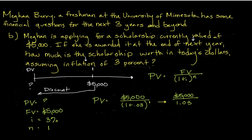Go ahead and take out your calculator or use the one on your computer, and divide five thousand dollars by one point zero three. What you should get is four thousand eight hundred fifty-four dollars, and if you round, you're going to end up with thirty-seven cents. So our present value is four thousand eight hundred fifty-four dollars and thirty-seven cents.